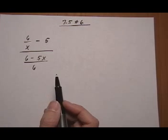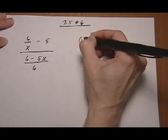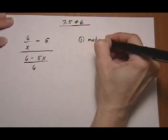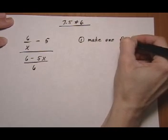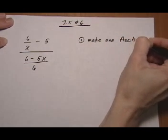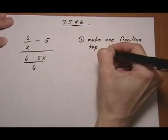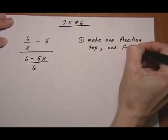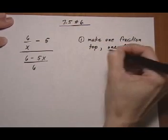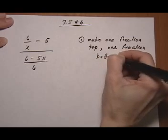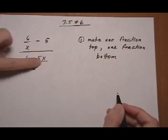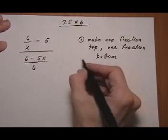So the very first step when we have something like this is make it so that you have one fraction top and bottom. Make one fraction top, one fraction bottom. Our bottom one already is just one fraction, but sometimes you're going to have it where the bottom one is two separate fractions also.